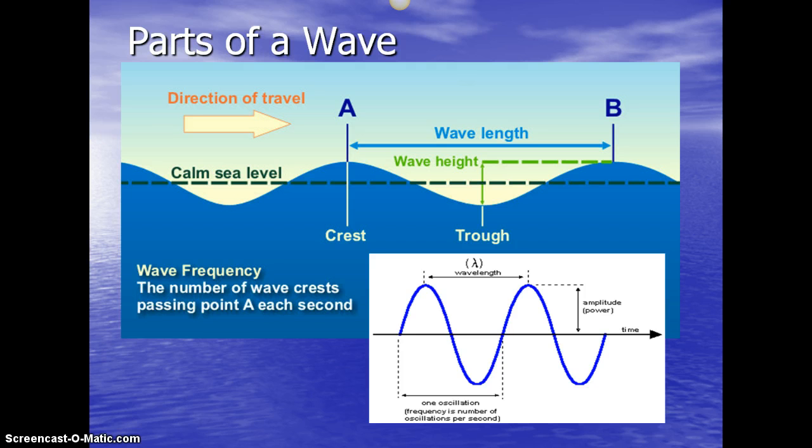Our parts of the wave here: we have wavelength, which is from point A to point B in our picture. The wave height is our amplitude. Amplitude is from the baseline, the calm sea level, to the top of the wave or from that calm spot to the bottom of the wave.